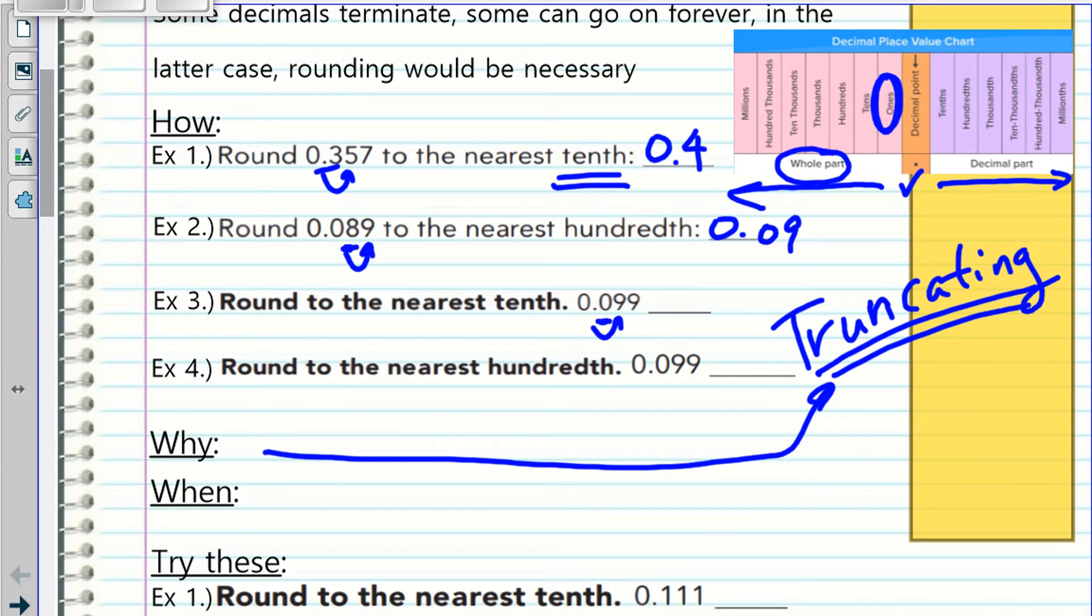Round 0.099 to the nearest tenth. So this is the tenth place. Look at the number before that. What would 0.0 turn into? That's right, 0.1. The nine here, you round that up, so the zero here becomes a one.